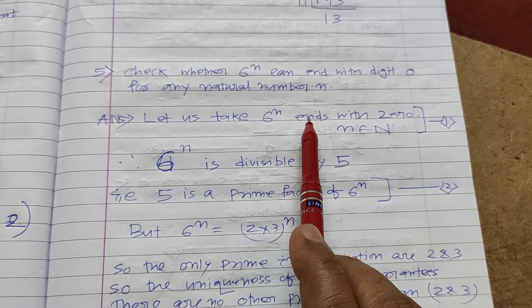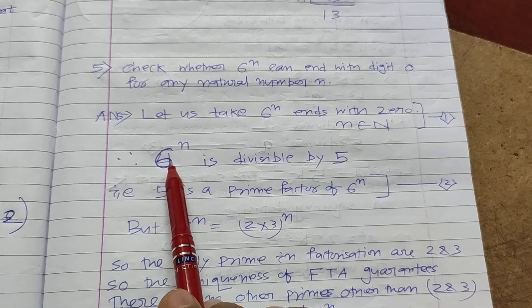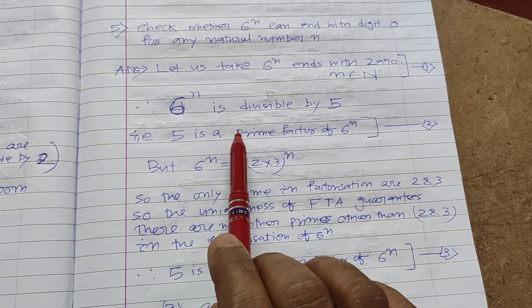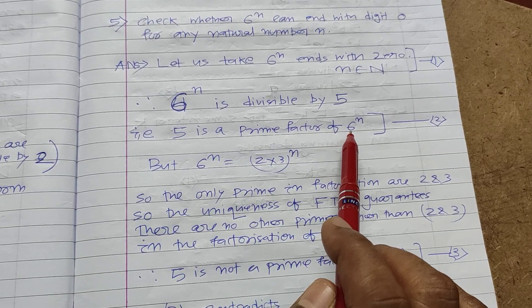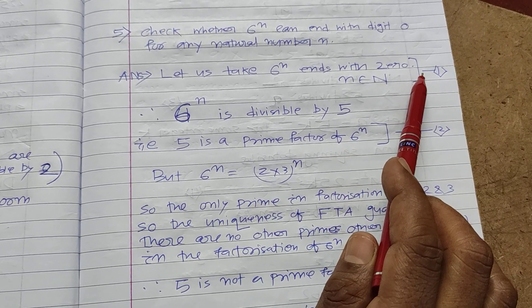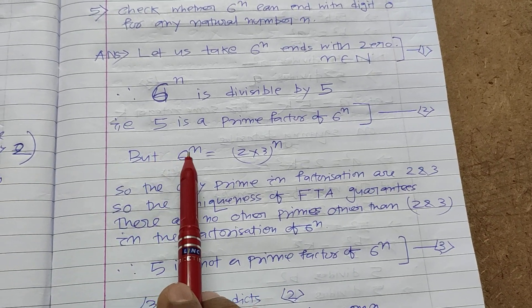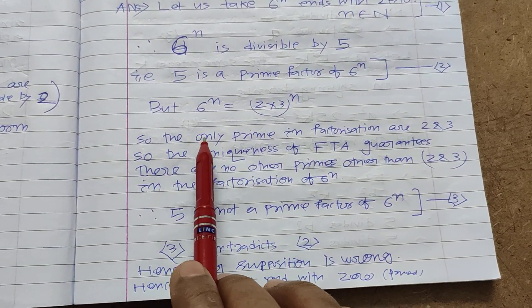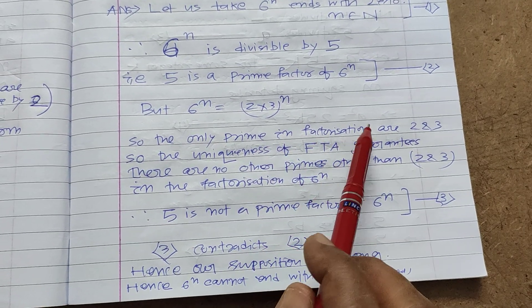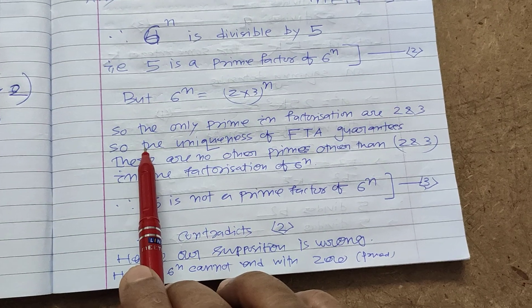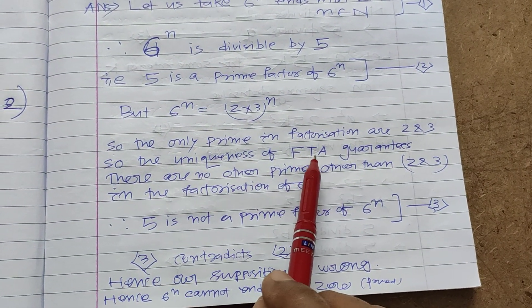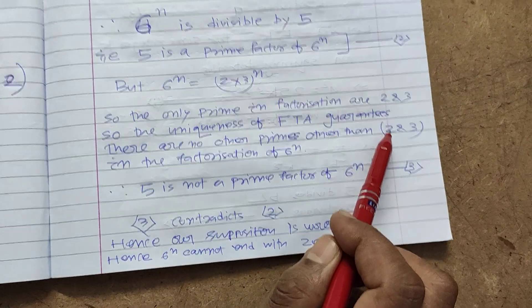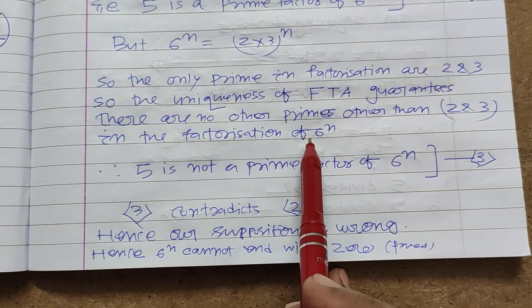If 6 to the power of n ends with 0, then 6 to the power of n must be divisible by 5. That is, 5 is a prime factor of 6 to the power of n. But you know, 6 to the power of n is equal to (2 multiplied by 3) whole to the power of n. So the only primes in the factorization are 2 and 3. The uniqueness of the Fundamental Theorem of Arithmetic guarantees that there are no other primes other than 2 and 3 in the factorization of 6 to the power of n.